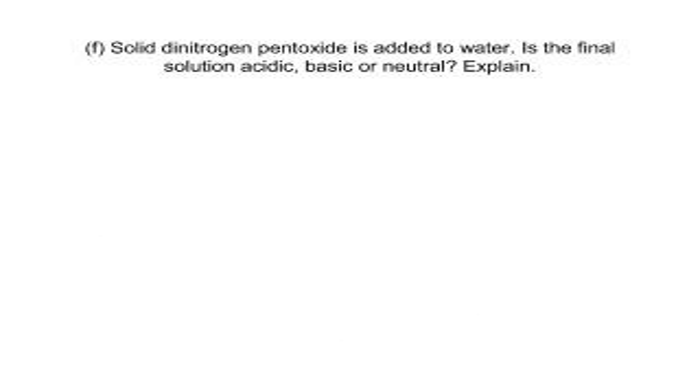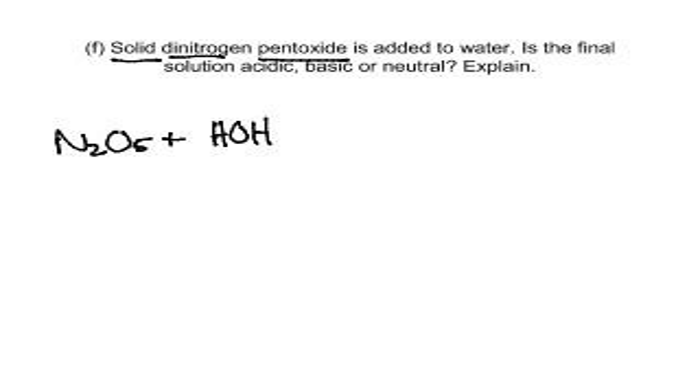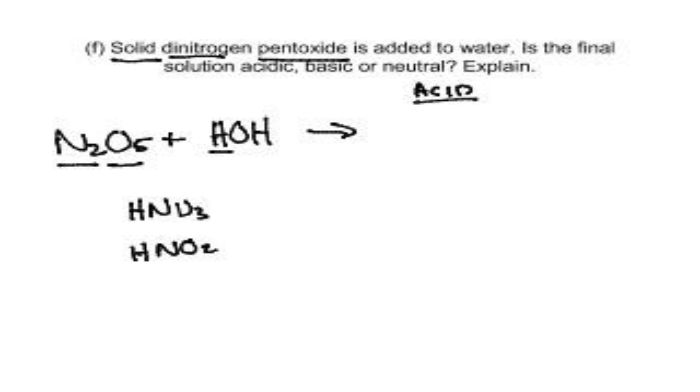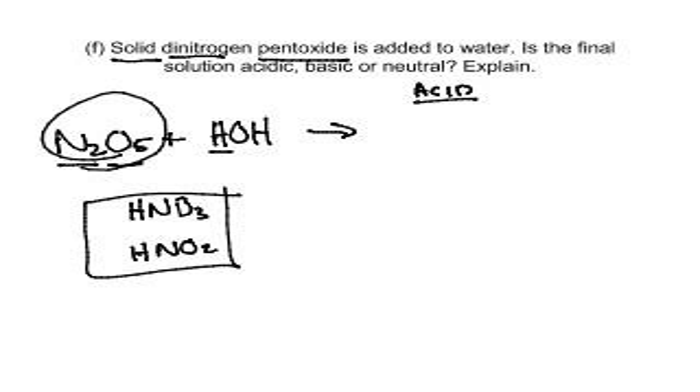Let's take a look at letter F. We've got solid dinitrogen pentoxide, so that'll be N2O5, and it's added to water. I hope you've seen the pattern here. This is a non-metal oxide. Non-metal oxide plus water make acids. So here we're going to make some variety of an acid, hydrogen. You're going to make either HNO3 or HNO2. How do you know which one it is?